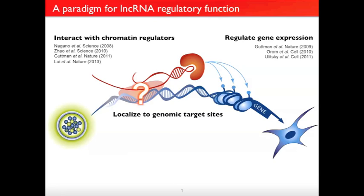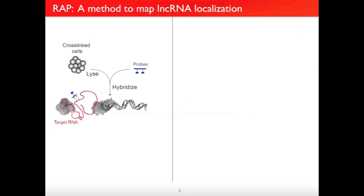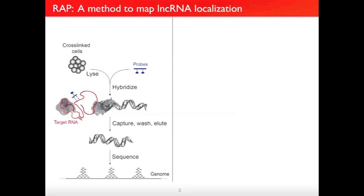We sat down and plotted out what this might look like. Conceptually, it's very similar to ChIP. We cross-link cells to fix endogenous lncRNA-chromatin interactions, lyse the cells and break up the genomic DNA, and capture these complexes by incubating the lysate with probes that are antisense to the target RNA and have biotin attached, so we can purify these complexes with streptavidin, sequence the associated DNA, and figure out where the lncRNAs bind.